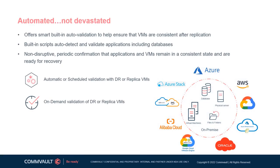When a disaster strikes, things can't get any worse — can they? The only thing worse than a disaster is not being able to recover from one. Automatic validation should be a key talking point. Customers not only need the ability to replicate their VMs, but they also need the ability to validate that the replicated VMs are functioning correctly in the event of a disaster.